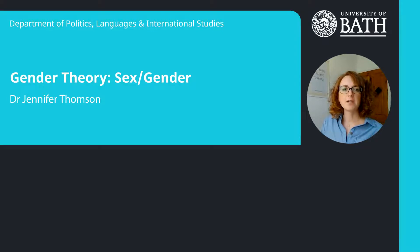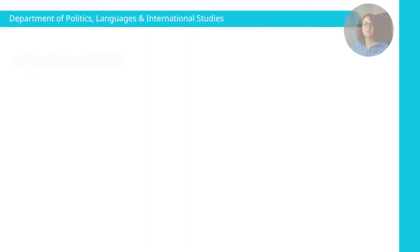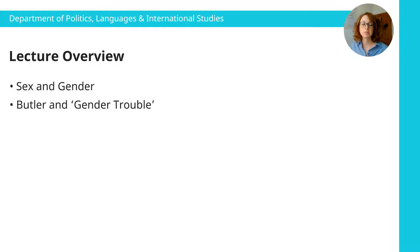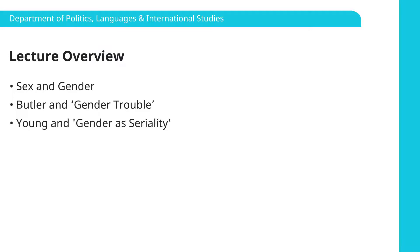This is the lecture for PL 51029 gender theory on sex and gender. Just to do a quick overview of what we're going to cover in this short lecture: I'm going to talk first of all about some of the common definitions, how we understand sex and gender in everyday parlance. Then we're going to look in more depth at the core readings — the first chapter and the conclusion of Judith Butler's book Gender Trouble and then Iris Marion Young's article Gender as Seriality. At the end I'll talk about how sex and gender have become politicised and some of the controversies around them in present day, especially in relation to global politics.